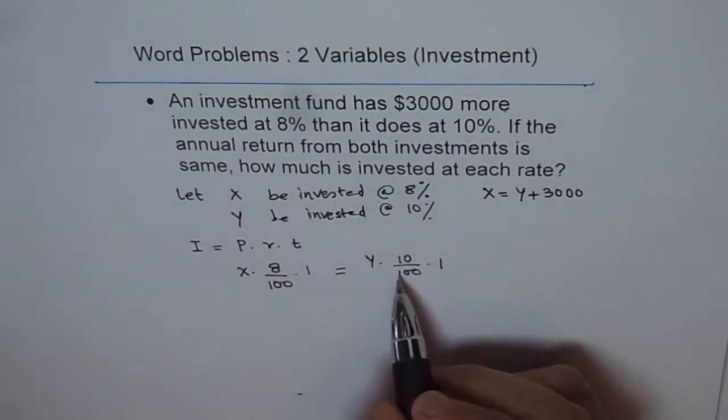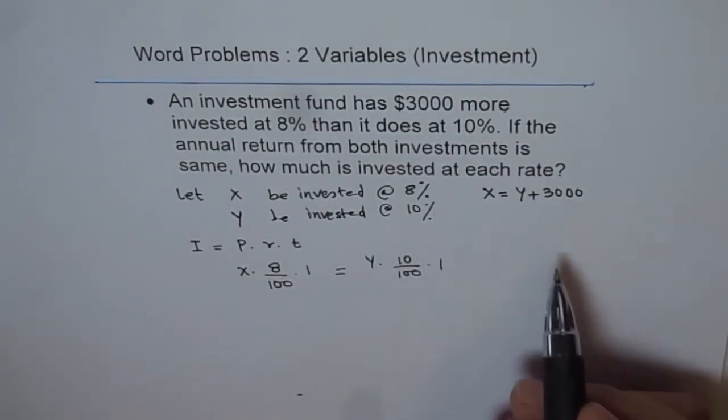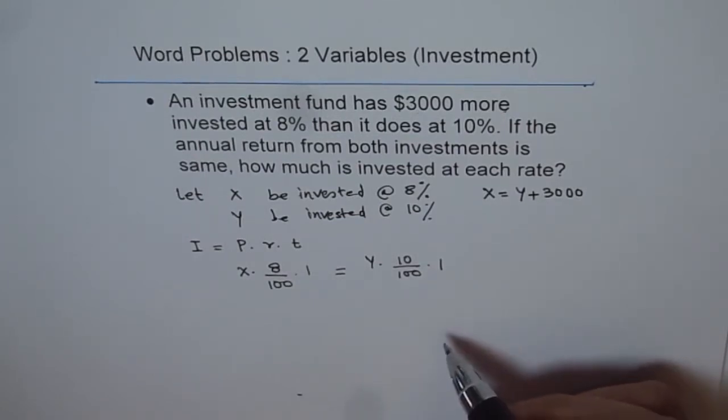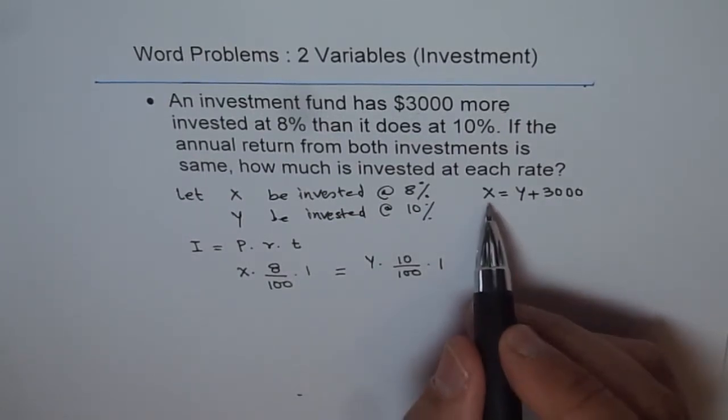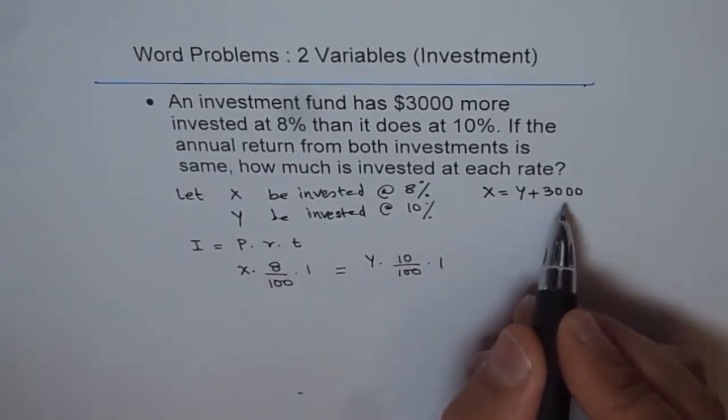Now in this equation, we can replace value of X with Y plus 3000, find Y and then X. So X is Y plus 3000, let me replace this X with Y plus 3000.